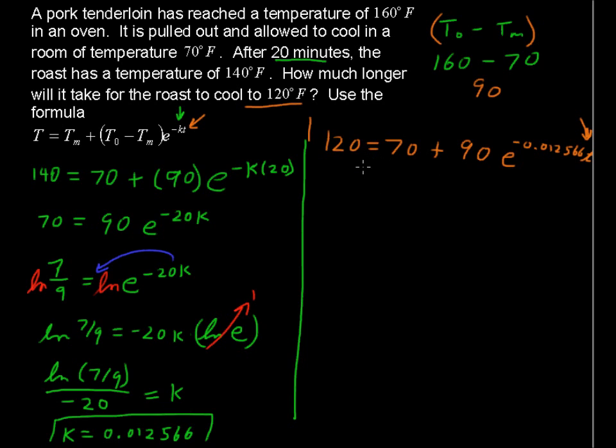Let's subtract 70 from each side, and you get 50 equals 90 times E to the negative 0.012566 T. Divide each side by 90, so we can isolate the base and its exponent, and you get 5 ninths. The rest of this is going to follow very similar to the last problem. 5 ninths equals E to the negative 0.012566 T.